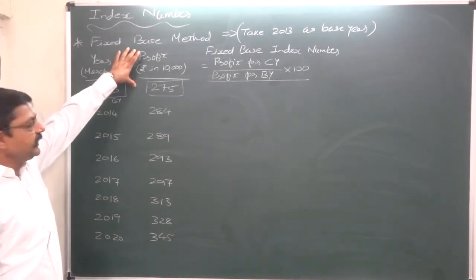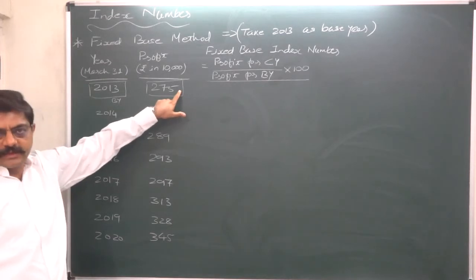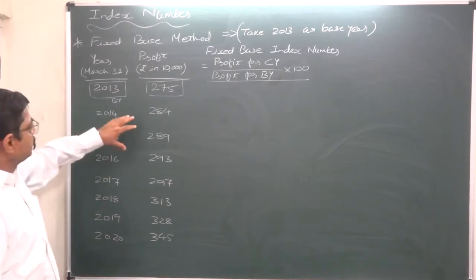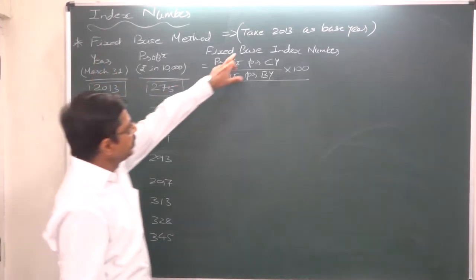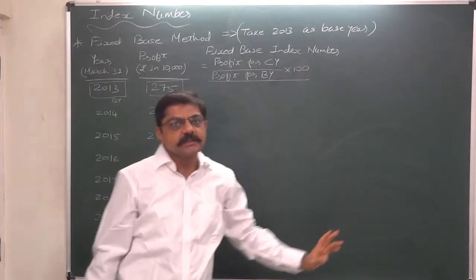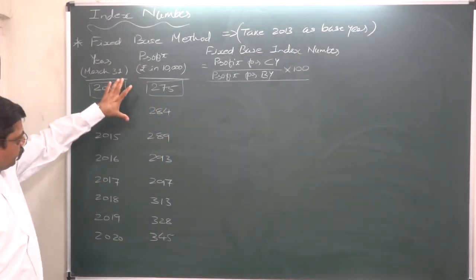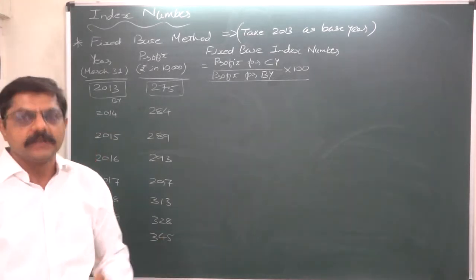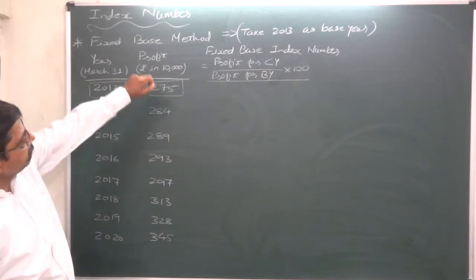These are the profit figures in 10,000s. 275 means 2.75 lakhs or 27,500 or 2.75 million. Since we need to calculate index numbers by fixed base method, we have been asked to take 2013 as base year. That means for calculating index numbers for all these years, the base year will be fixed at 2013.